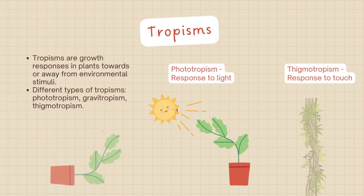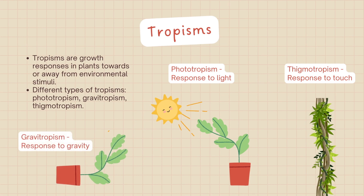Plants exhibit remarkable growth responses to environmental stimuli. Tropisms are growth movements towards or away from specific stimuli. Phototropism refers to the growth towards light, while gravitropism is the growth response to gravity. Thigmotropism, on the other hand, is the response to touch or contact with solid objects. These tropisms allow plants to optimize their growth and survival in their respective environments.